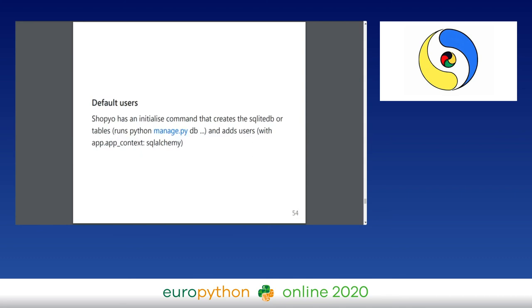For default users, manage.py makes it easy to add custom functions. You can make an initialize command that runs whenever you create a new project to set up basic things — such as adding new users. You have an add_user function and a JSON file with several users' names and email addresses, which get added to the database by default so you can use them out of the box for testing or to log into the admin panel.